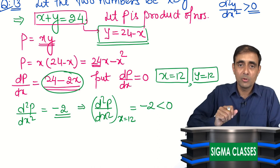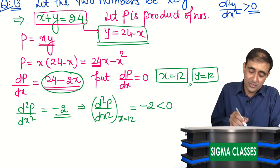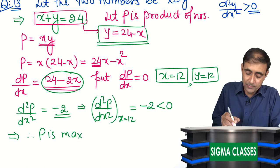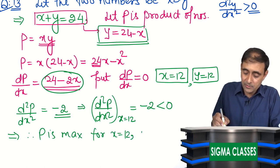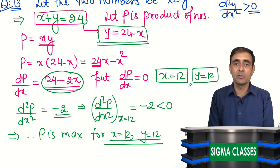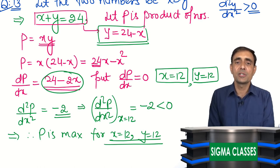The second derivative d²P/dy² = -2, which is less than 0. Since the second derivative is negative, P is maximum at x = 12 and y = 12. Therefore, if we split 24 into two equal parts of 12 and 12, their product is maximized.